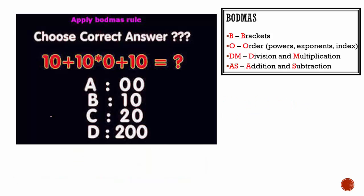10 plus 10 multiplied by 0 plus 10 — we're given four answers. No brackets, no order, so we do multiplication first: 10 multiplied by 0 is equal to 0. So 10 plus 0 plus 10 is equal to 20. The answer is C.